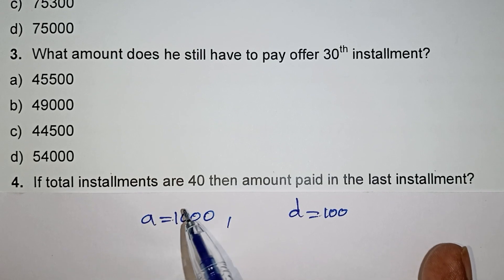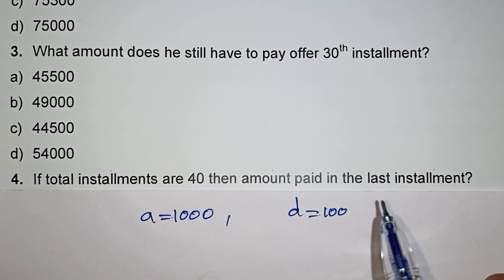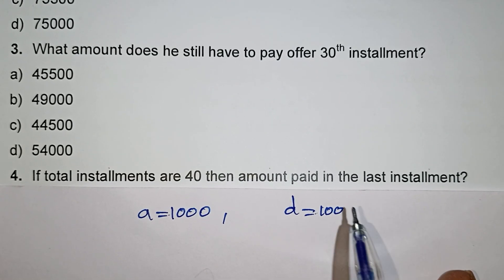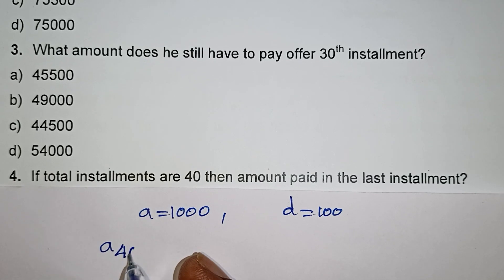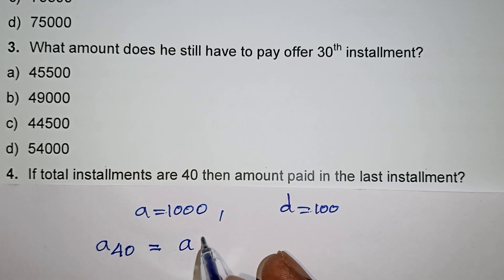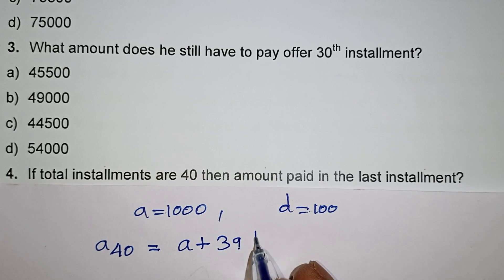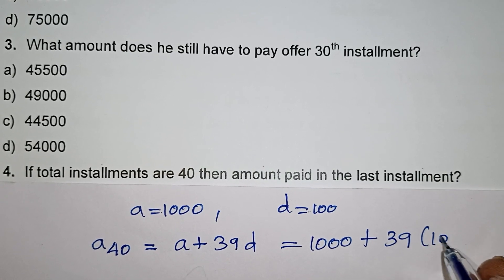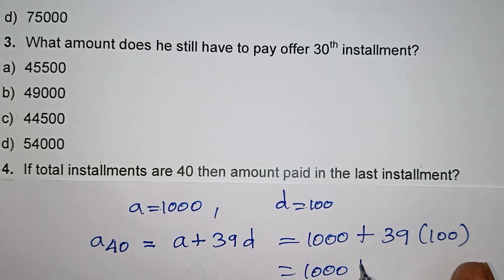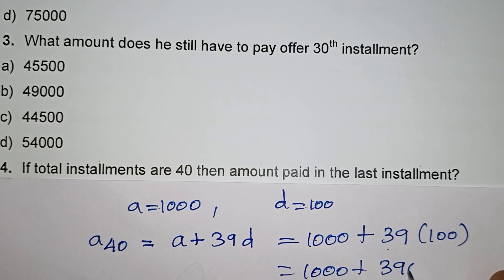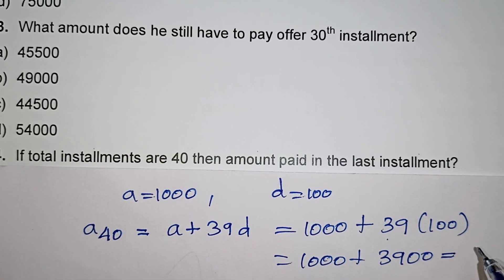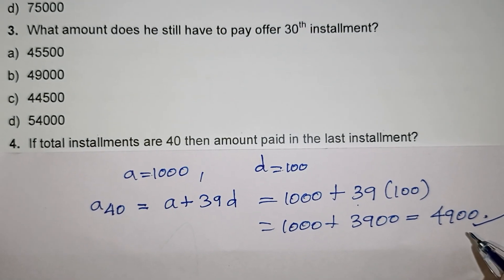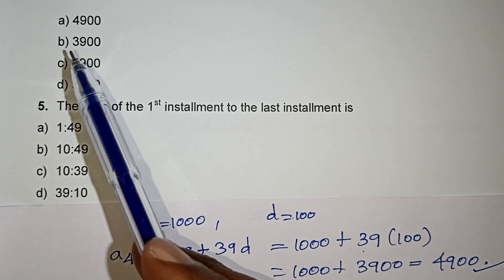Look at the next question: if the total installments are 40, what is the amount paid in the last installment? The last installment will be the 40th installment. A40 = A + 39 × D = 1000 + 39 × 100 = 1000 + 3900 = 4900. So the amount paid in the last installment is 4900 rupees, and the first option is correct.